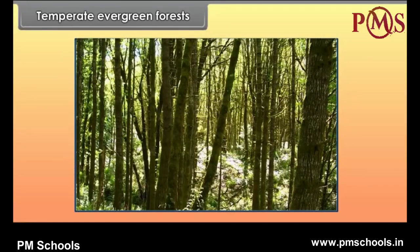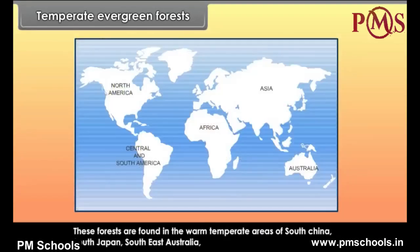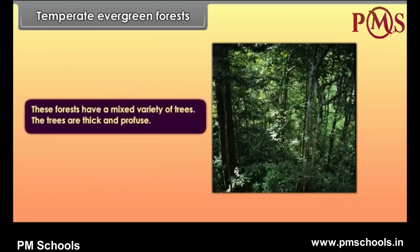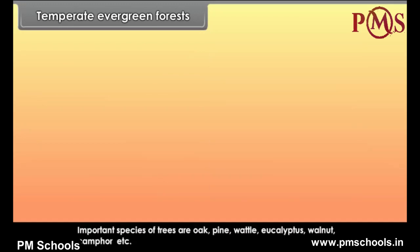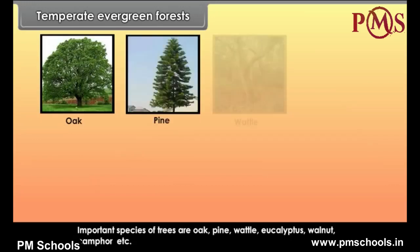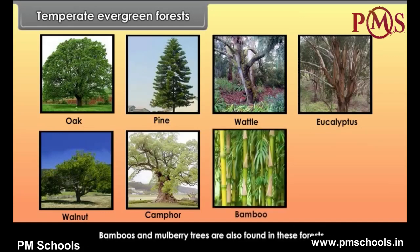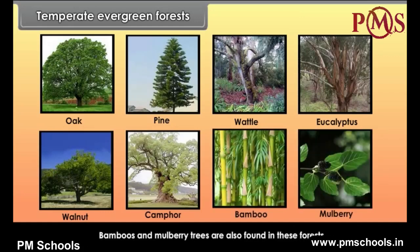Temperate Evergreen Forests. These forests are found in the warm temperate areas of South China, South Japan, Southeast Australia, East Africa, Southeast Brazil, Uruguay and Southeast USA. Characteristics: These forests have a mixed variety of trees. The trees are thick and profuse. Important species of trees are Oak, pine, wattle, eucalyptus, walnut, camphor etc. Bamboos and mulberry trees are also found in these forests.